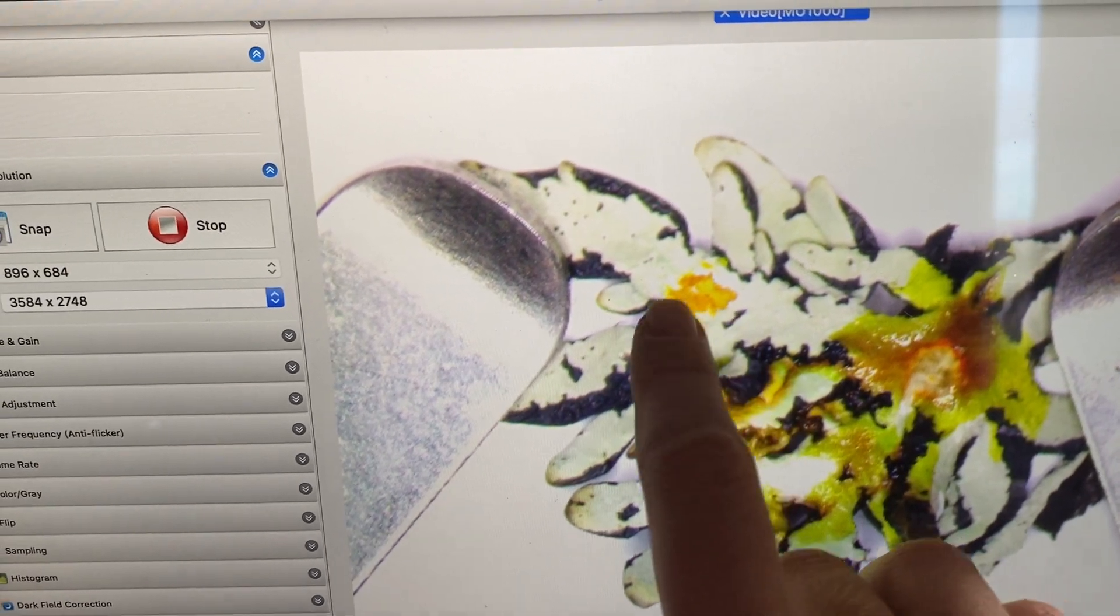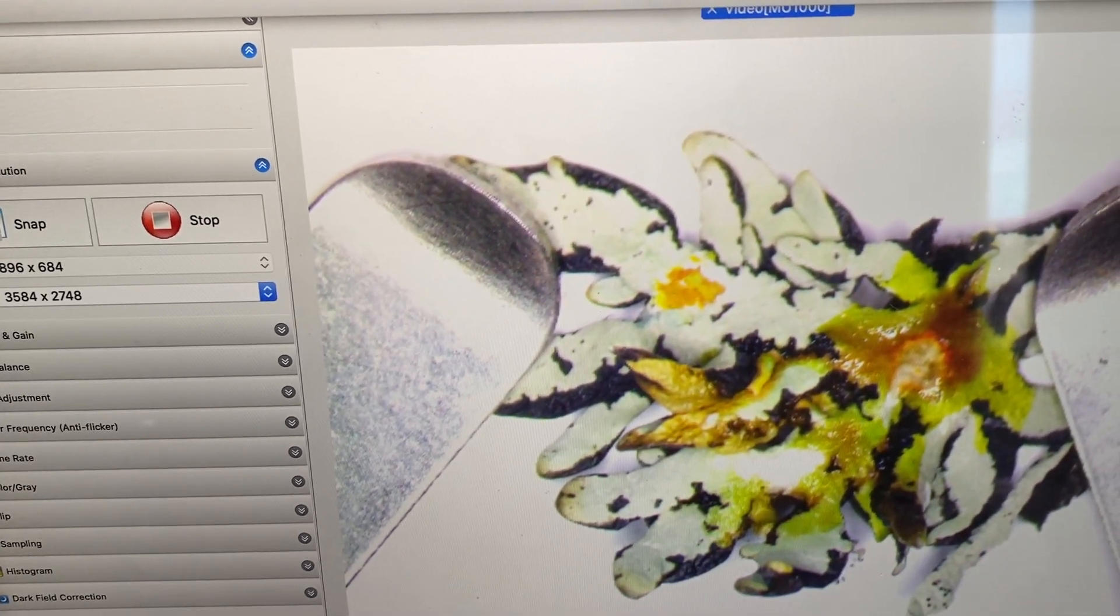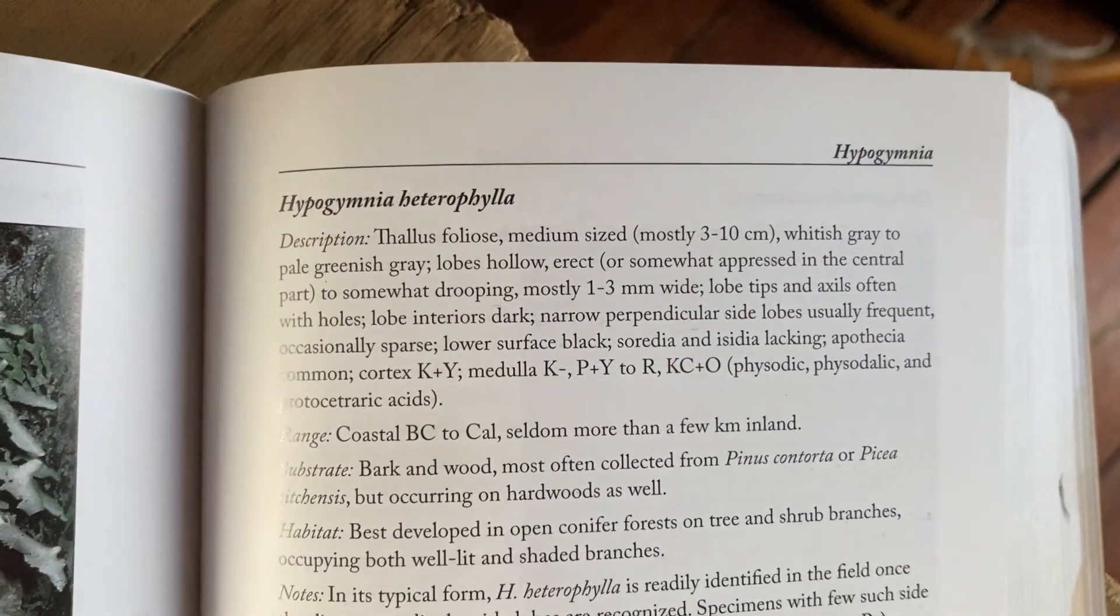Somewhere between yellow and it's developing red over time. So we have Hypogymnia heterophila.